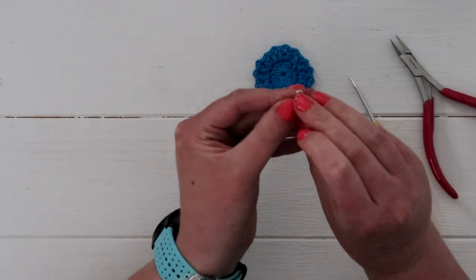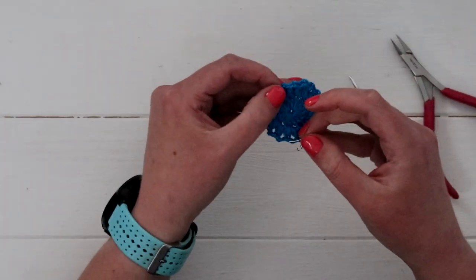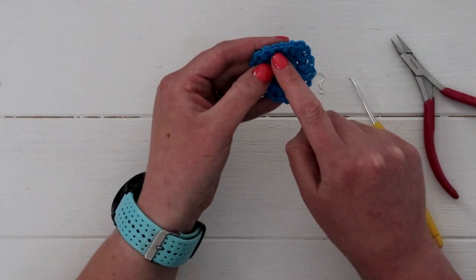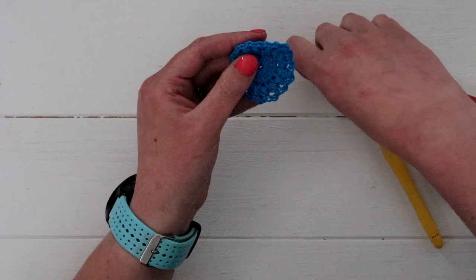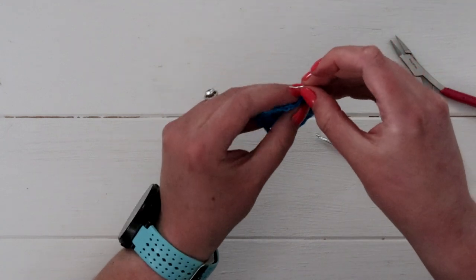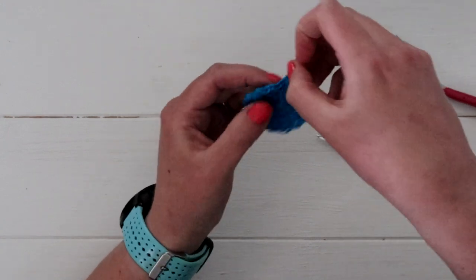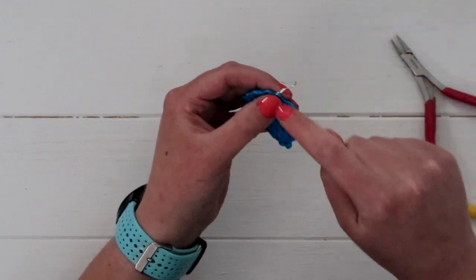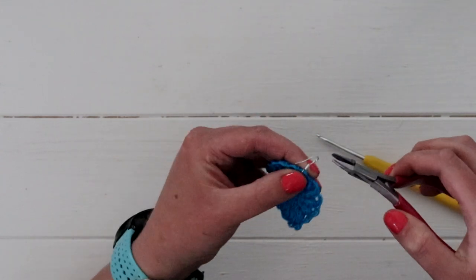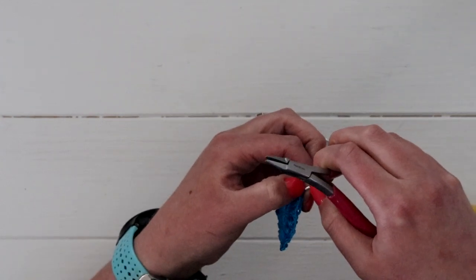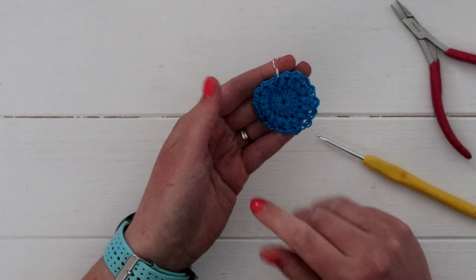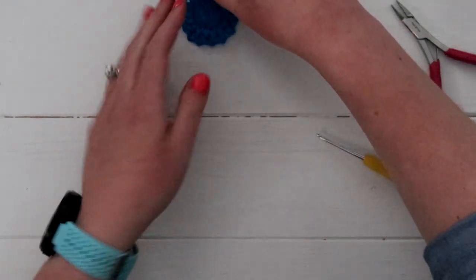So once your loop is open, you can join it literally anywhere on your sunburst. I usually choose to do it kind of right where the puff stitches started. So like between that starting chain. But it really doesn't matter. So you just hook this on. And then once your earring is on there, you're just going to close the ring. So again, you can just use your fingers, or you can use your jewelry pliers, but you'll just gently clamp it to secure it. And that is it. You'll just repeat the same process a second time so that you can have a pair of two earrings.